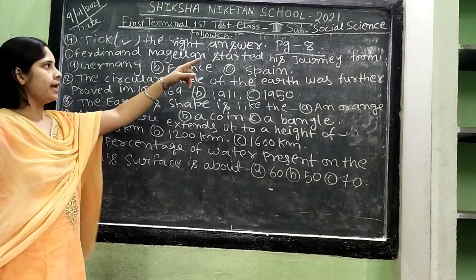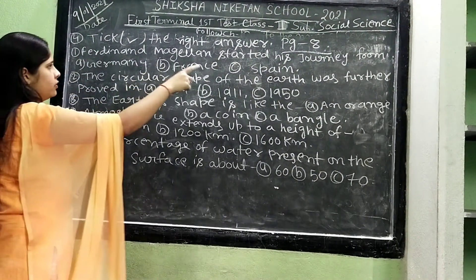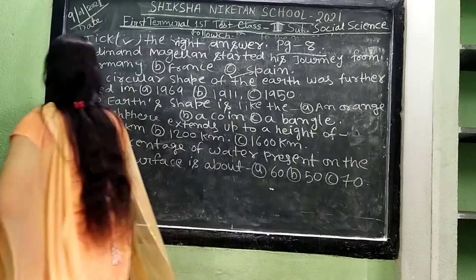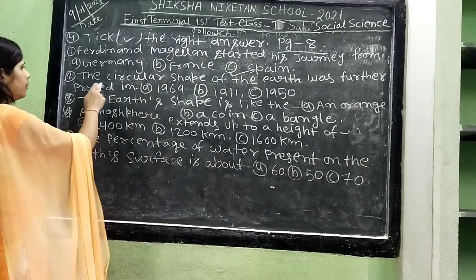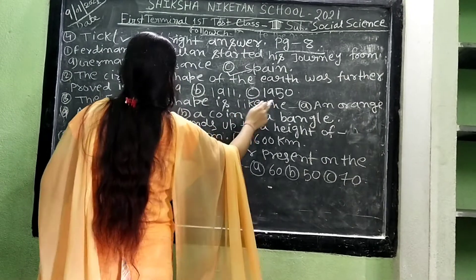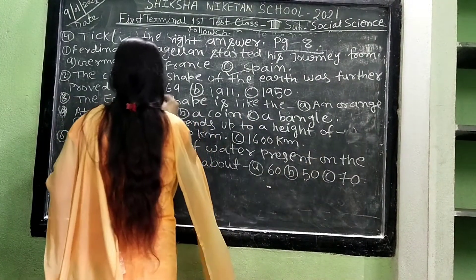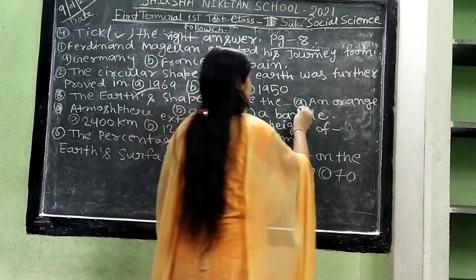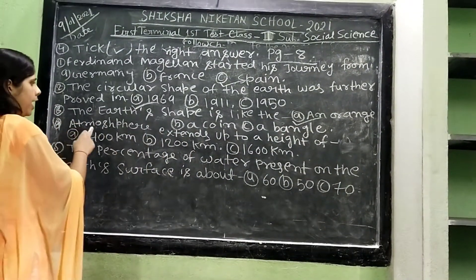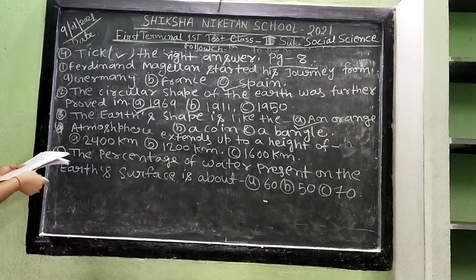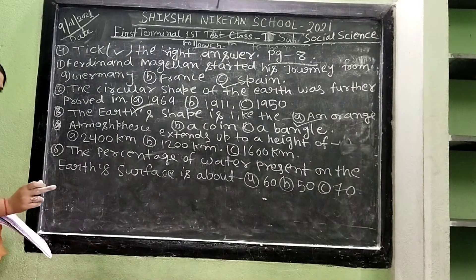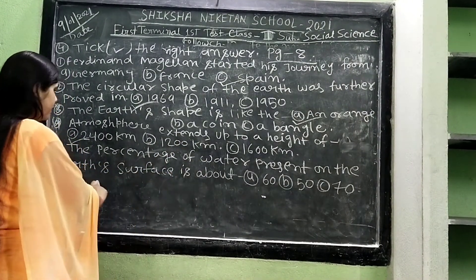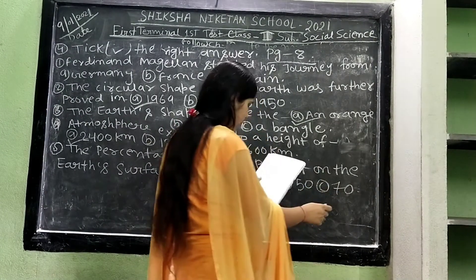Matter number 4: Answers. Number 1: Magellan started his journey from — answer: Spain. Number 2: The circular shape of the earth was proven — answer: 1969. Number 3: The earth's shape is like — answer: an orange. Number 4: The atmosphere extends up to — answer: 24,000 km. Number 5: The percentage of water on earth's surface is — answer: 70.